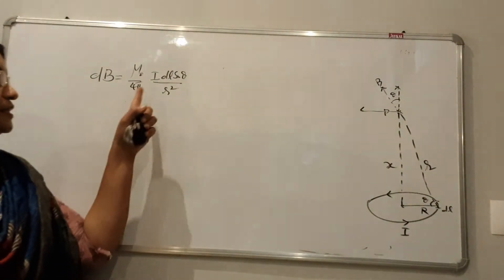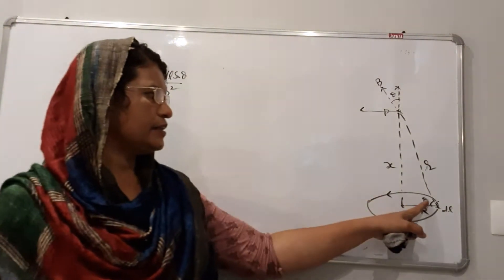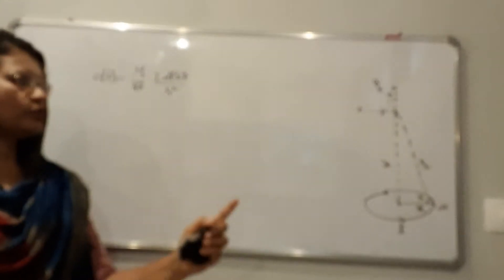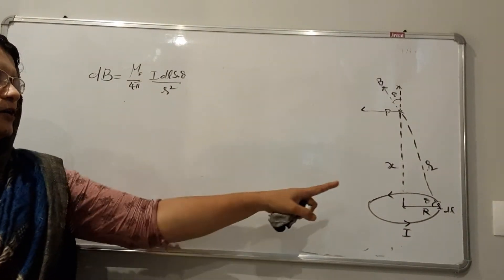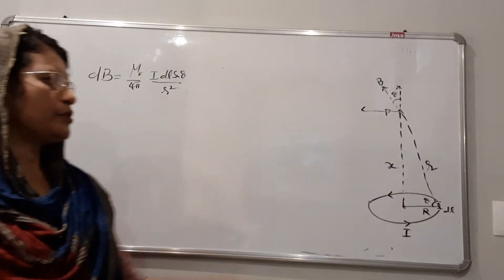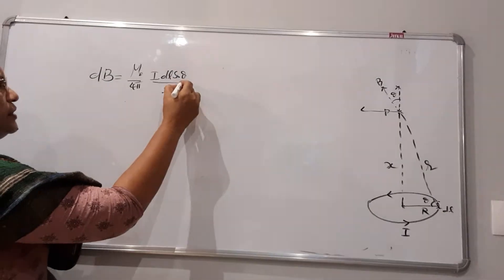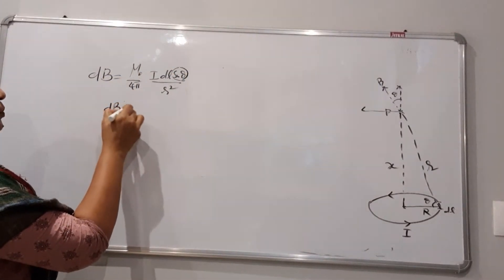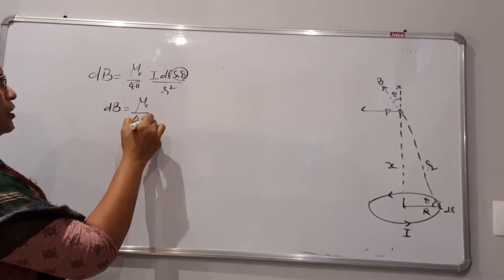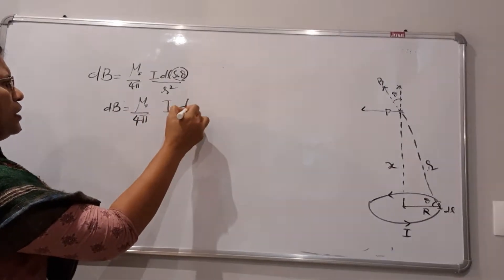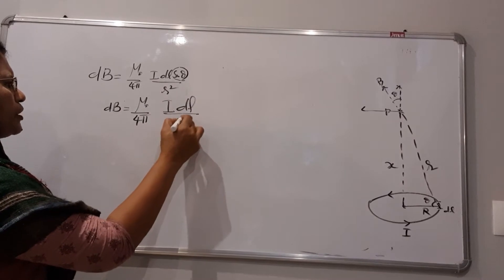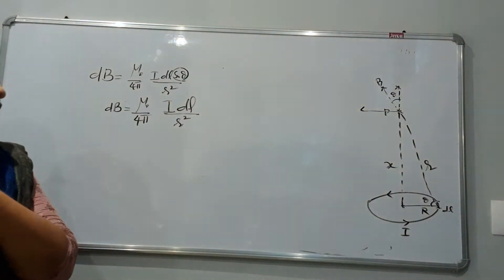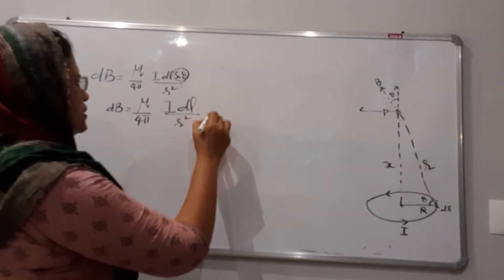Here, theta is the angle between I and DL. Since I is along the local direction and DL is along the loop, they are perpendicular to each other. Therefore sinθ = sin90° = 1, and so DB = μ₀/4π · I·DL / r². This is the basic equation.